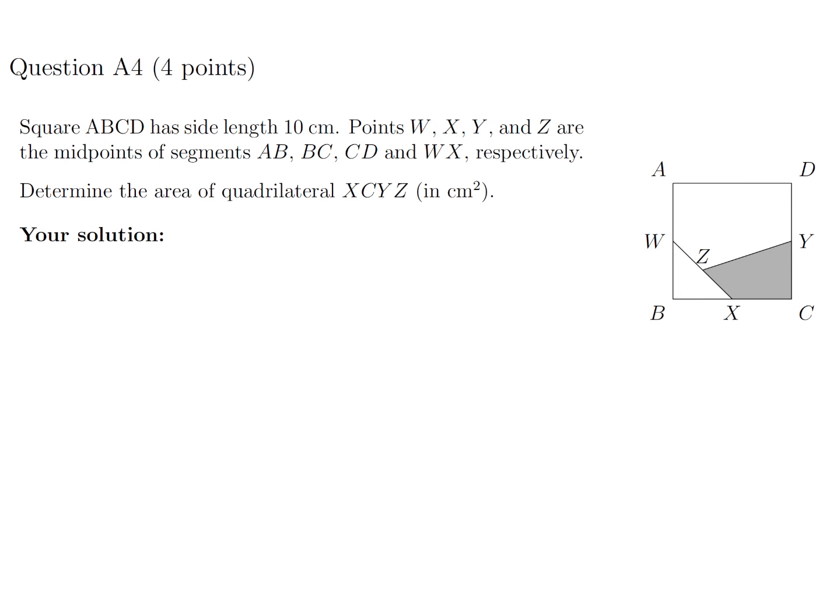Square ABCD has side length 10 cm. Points W, X, Y, Z are the midpoints of the segments AB, BC, CD, and WX respectively. Determine the area of quadrilateral XCYZ in cm squared.